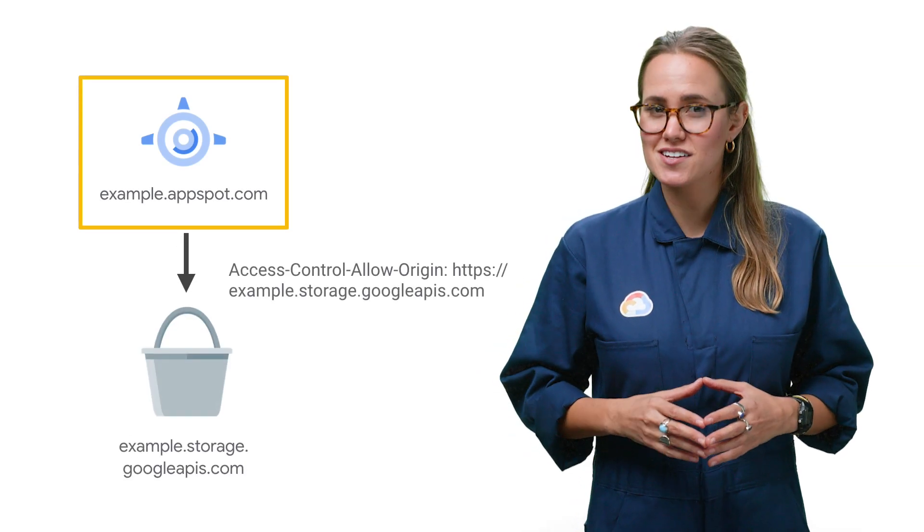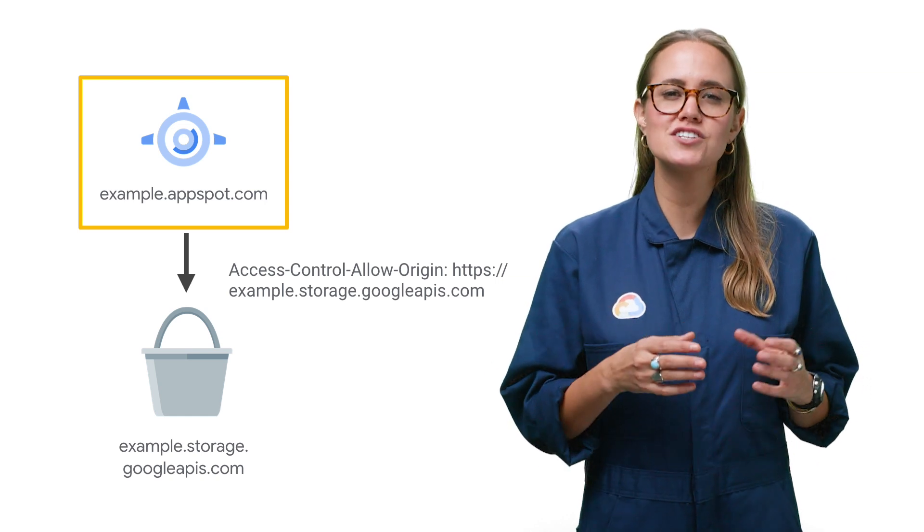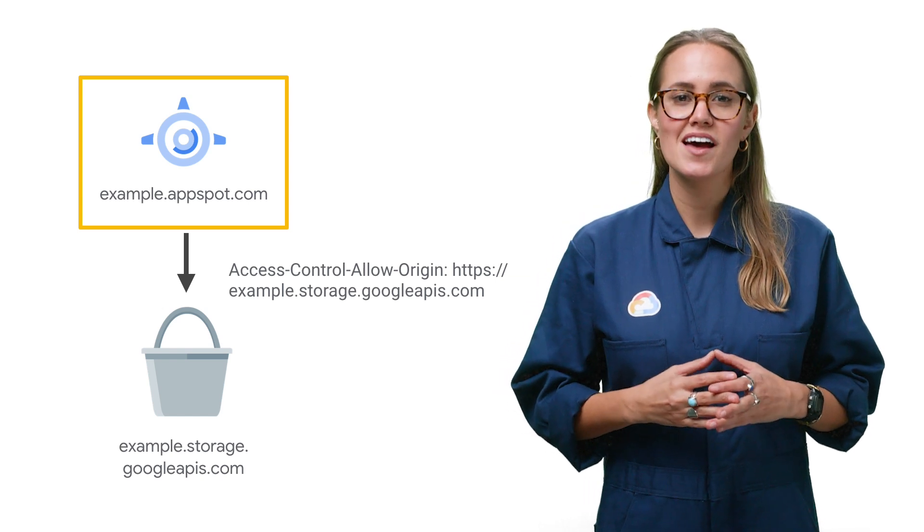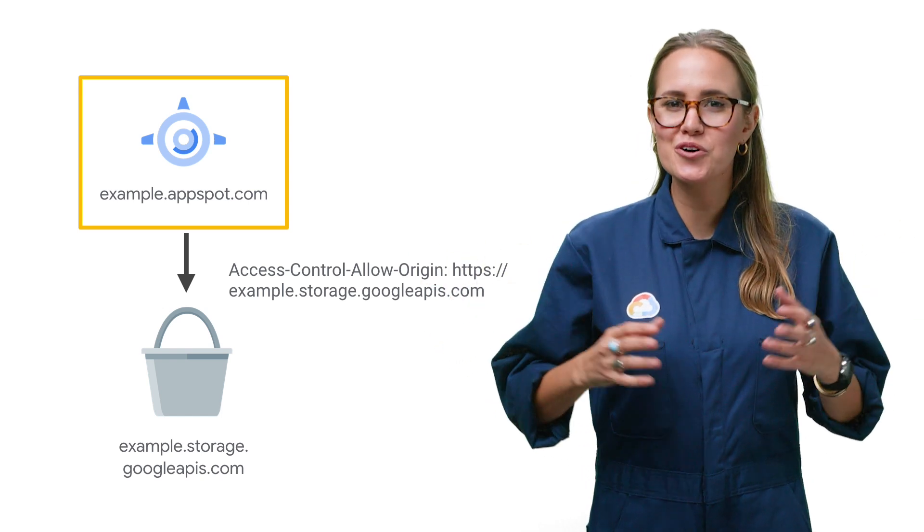So in our example case, you can configure the example.storage.googleapis.com bucket so that a browser can share its resources with the scripts from example.appspot.com. And there you go, no more CORS error.